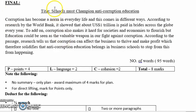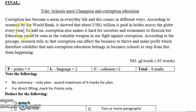So from that passage, this is your final. You can use the same title: 'Schools Must Champion Anti-Corruption Education.' In your answer booklet, if you do not have a title, that is minus half a mark. Here is the final summary: 'Corruption has become a norm in everyday life and this comes in different ways. According to research by the World Bank, it showed that about US $1 trillion is paid in bribes across the globe every year. To add on — a transitional phrase — corruption also makes it hard for societies and economies to flourish, but education could be seen as a valuable weapon in our fight against corruption. According to the passage, research tells us that corruption can affect the ability of businesses to thrive and make profit, which therefore solidifies that anti-corruption education belongs in business school to stop this from happening.' Number of words: 95. Remember to stay within the word limit.